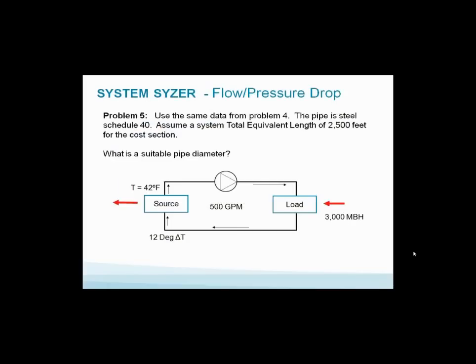Let's take a couple of quick examples on the flow and pressure drop piece. Problem number five: Use the same data from problem four. The pipe is still schedule 40. Assuming a total equivalent length of pipe of 2,500 feet, we want to understand the operating cost involved. What is a suitable pipe diameter? What size pipe would you pick? Remember the 2,500 feet of pipe would be the equivalent length including the equivalent feet for the T's, elbows, everything. What pipe size for 500 GPM, 42 degree in, 12 degree delta T with a load of 3 million BTUs?